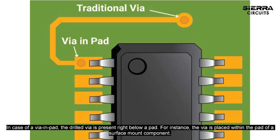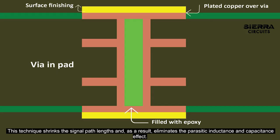In the case of via-in-pad, the drilled via is present right below a pad. For instance, the via is placed within the pad of a surface mount component. This technique shrinks the signal path length and, as a result, eliminates the parasitic inductance and capacitance effect.